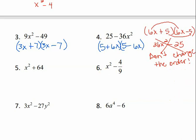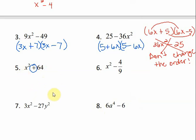Number five. First of all, always check to see if it's a difference of perfect squares. Both terms are perfect squares, but it's not a difference — it's a sum. Do they have a greatest common factor? No. So there is no way that we can factor this, which means this is prime.